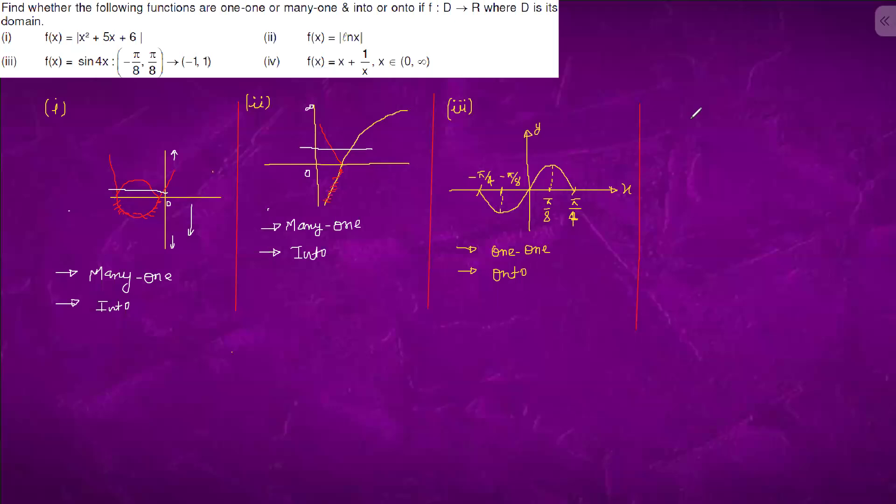Question number four. We have f(x) equals to x plus 1 by x. We have x plus 1 by x is bigger than equals to 2. So x plus 1 by x, we have something like this.